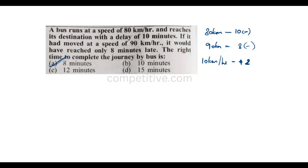With an increase of 10 km in speed, it will increase more speed. The delay at 80 km per hour and increase at 90 km per hour are used to calculate the correct journey time.